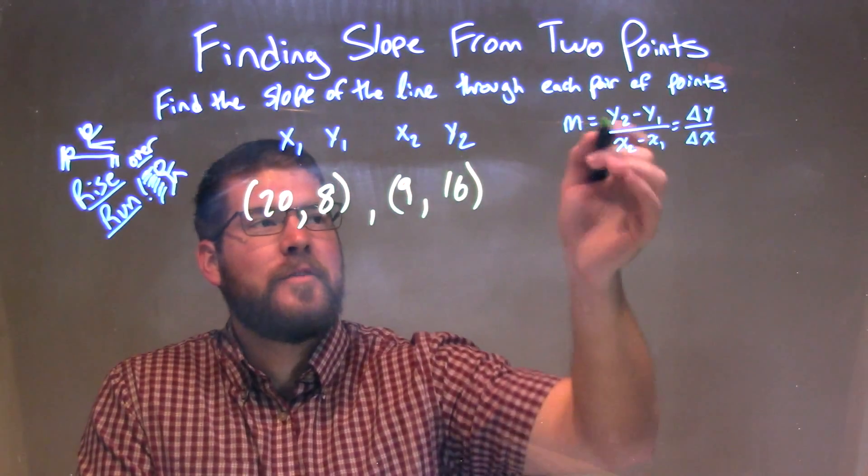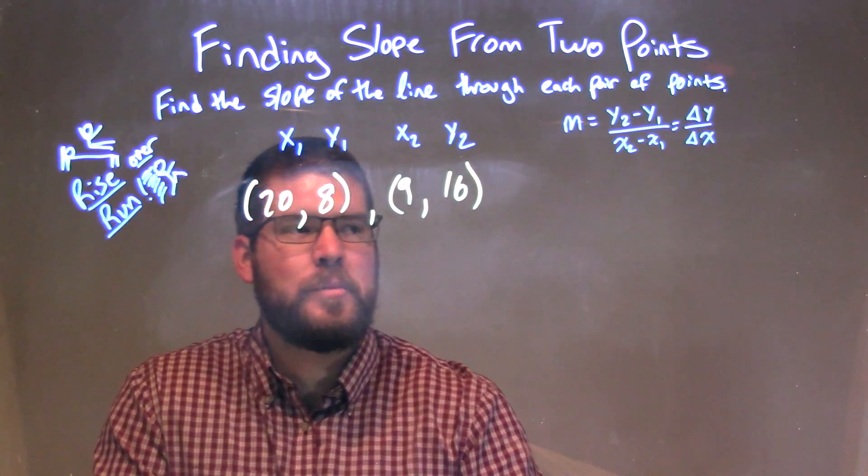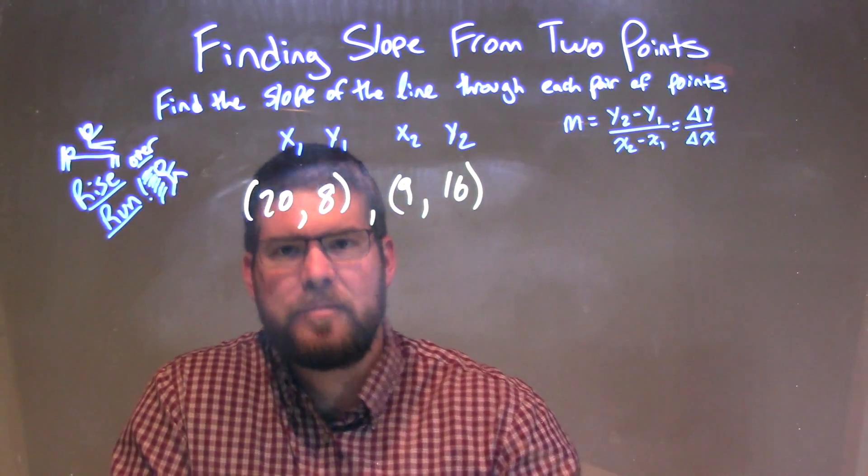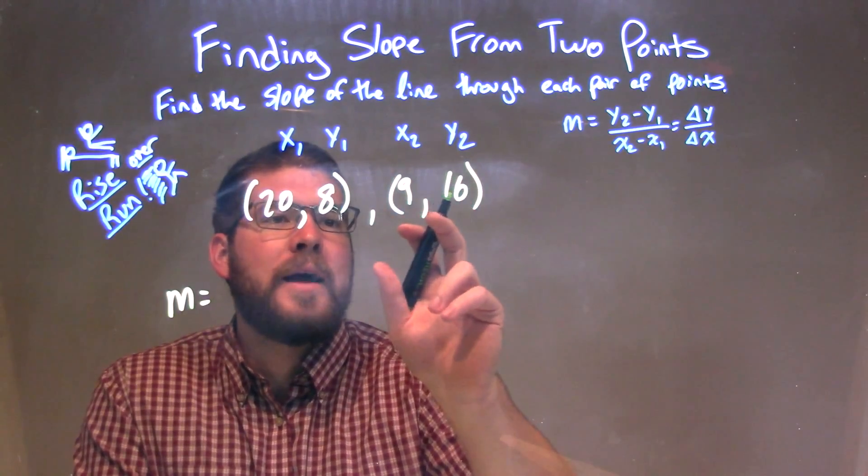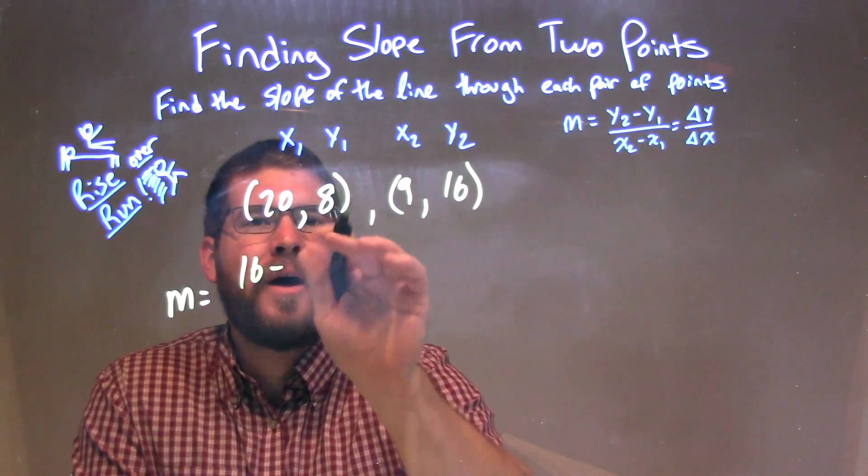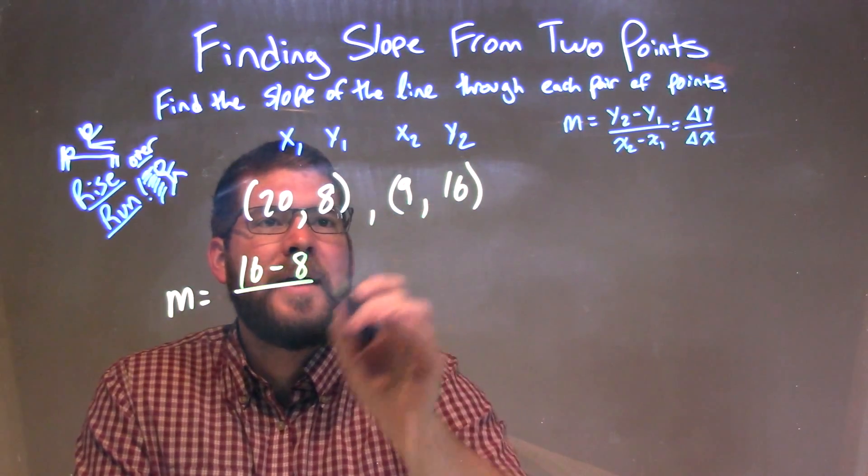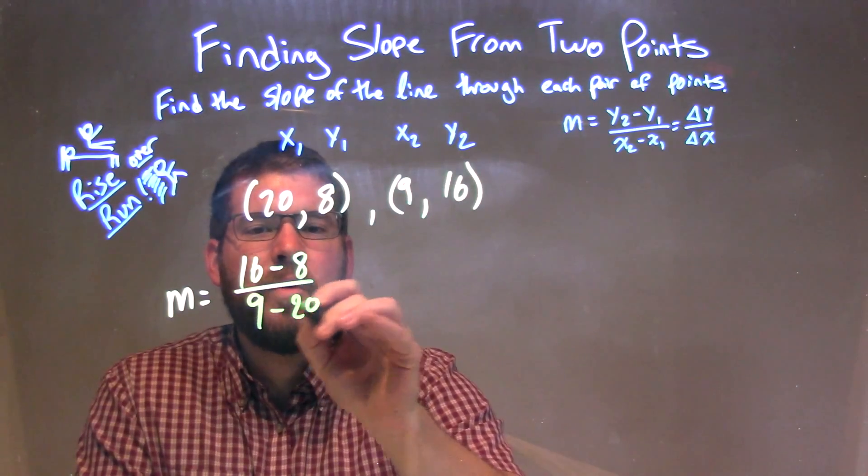So my slope formula says y2 minus y1 over x2 minus x1, change in y over change in x. So we have m, my slope here, is y2, 16, minus y1, which is 8, over x2, 9, minus x1, which is 20.